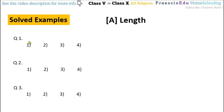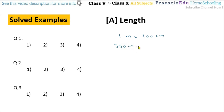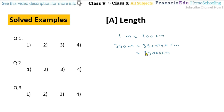Question number one: 350 meter means how many centimeters? We know that 1 meter equals 100 centimeters. So 350 meter means 350 multiplied by 100, which equals 35,000 centimeters. This is given in option number 3.